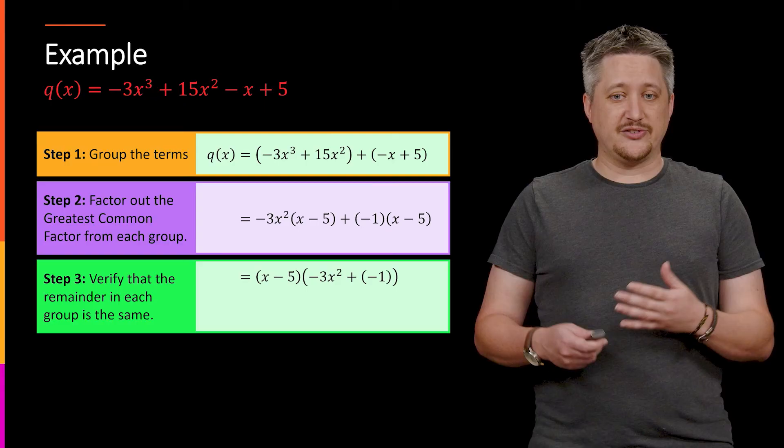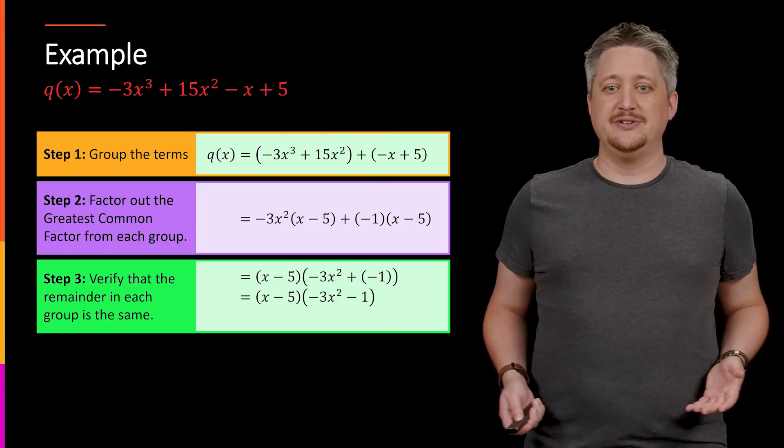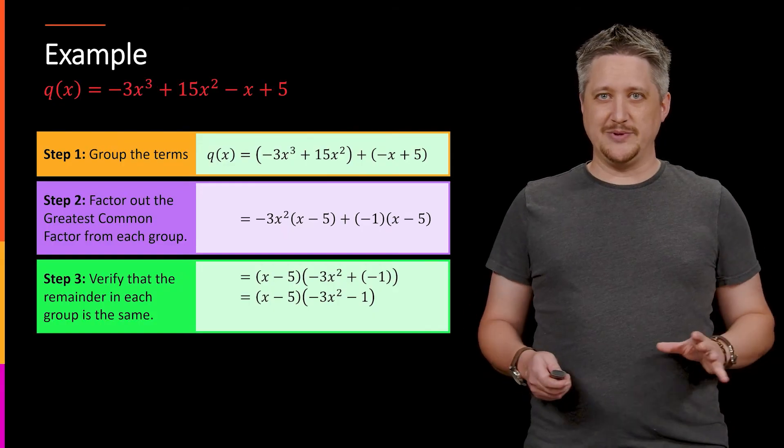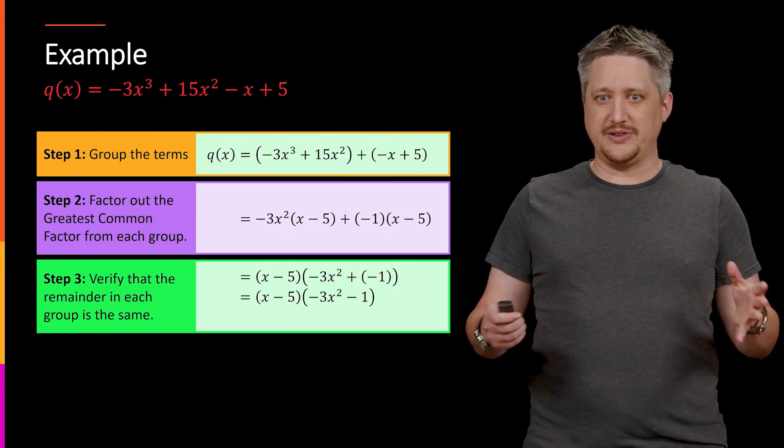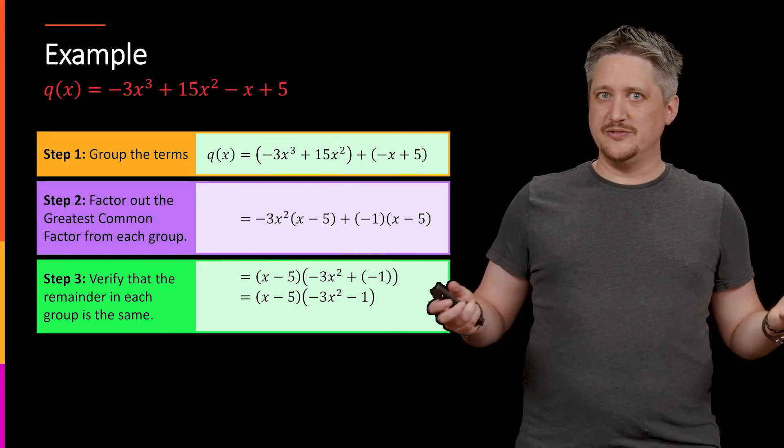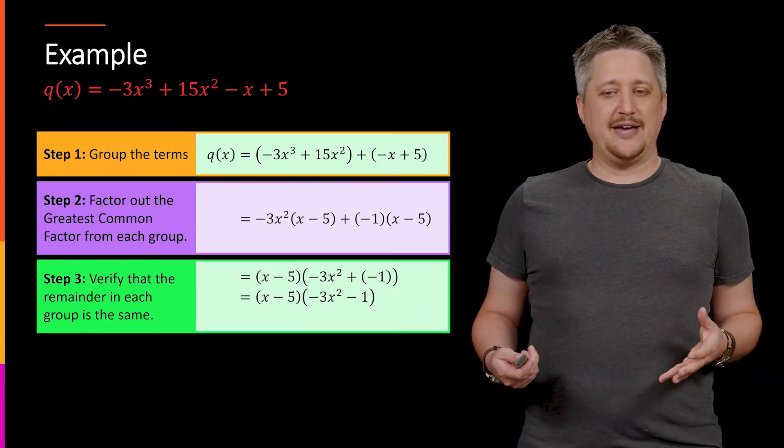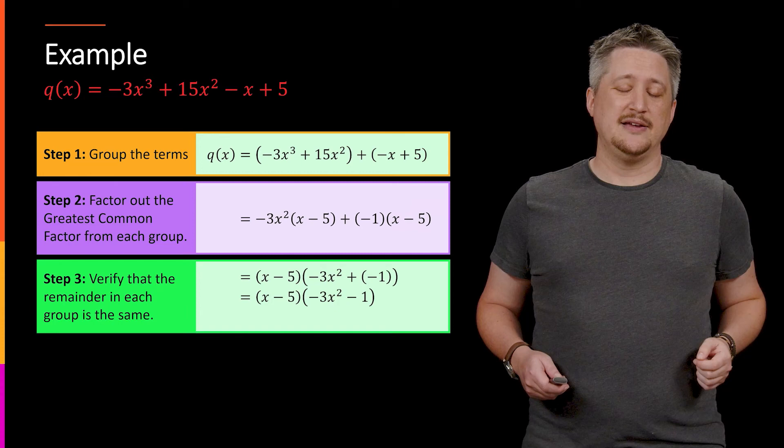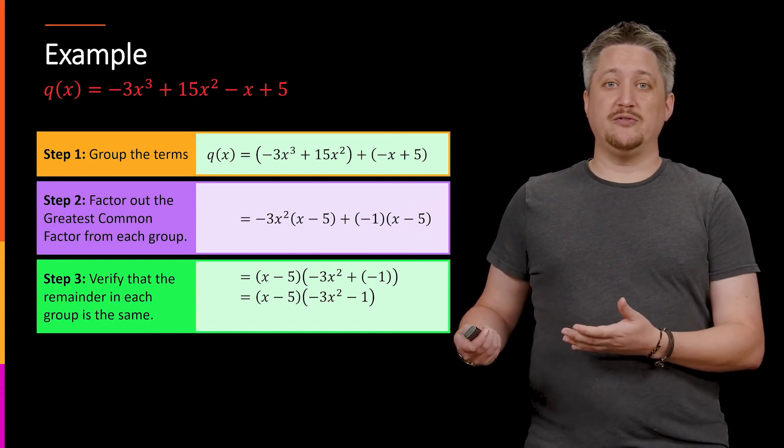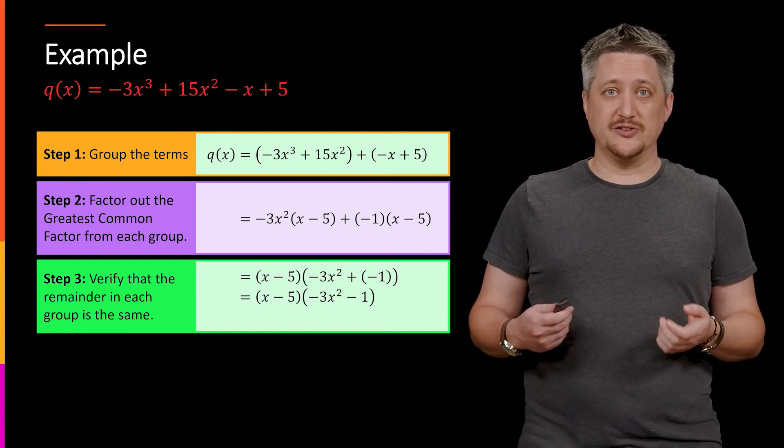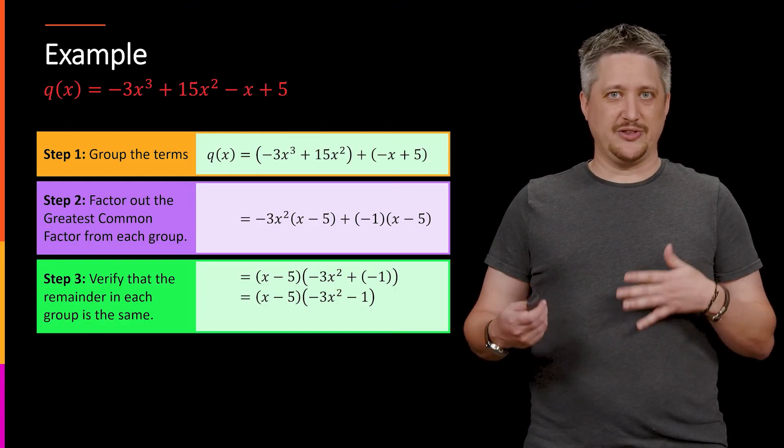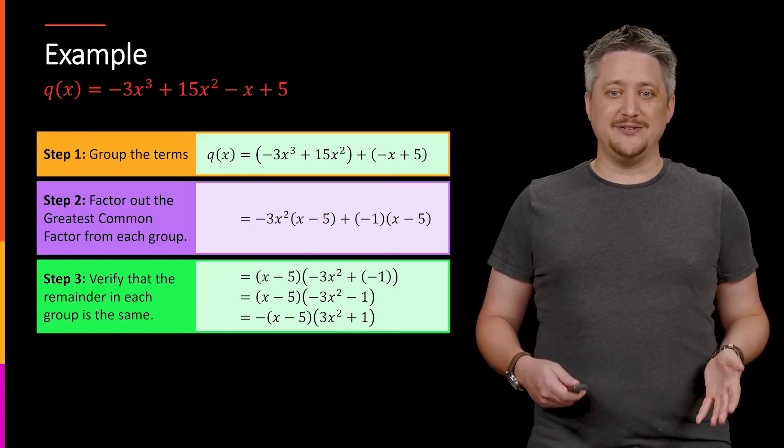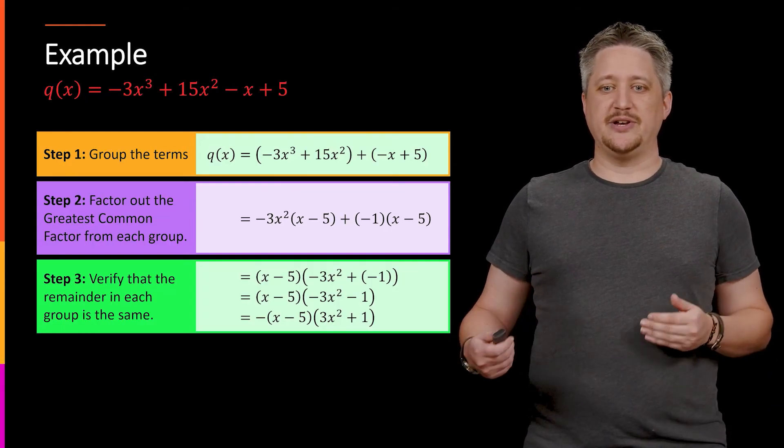So I have negative 3x² plus negative 1. Now I could write that as just x minus 5 times negative 3x² minus 1. This is perfectly legitimate and a perfectly fair final form, if you will. Some people like having positive leading terms as often as they can. And so some people will factor out the negative in that second term because both terms are negative, making sure that you get a positive 3x². So you could also write this as negative times x minus 5 times 3x² plus 1.